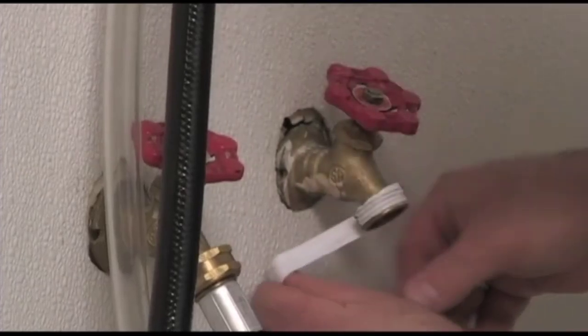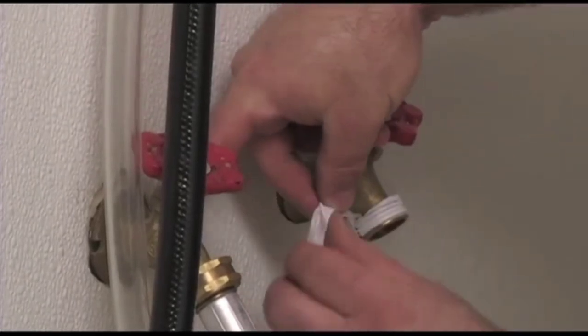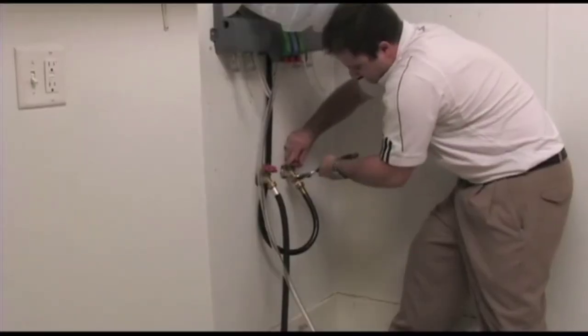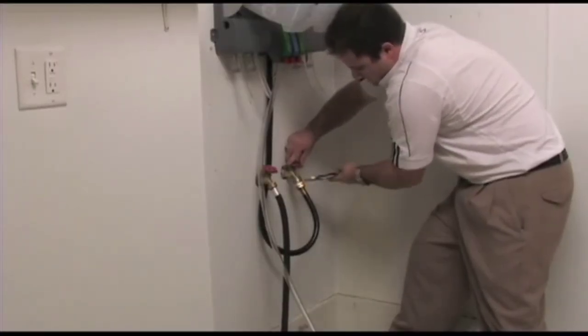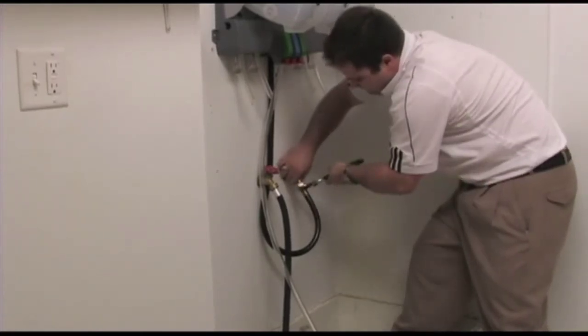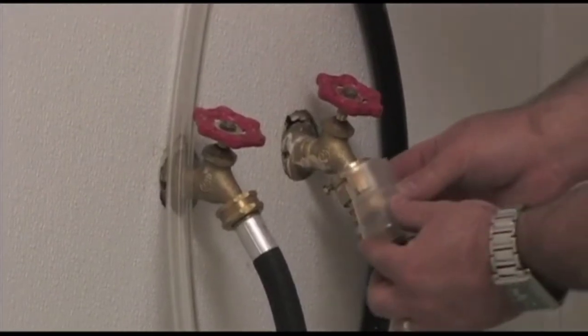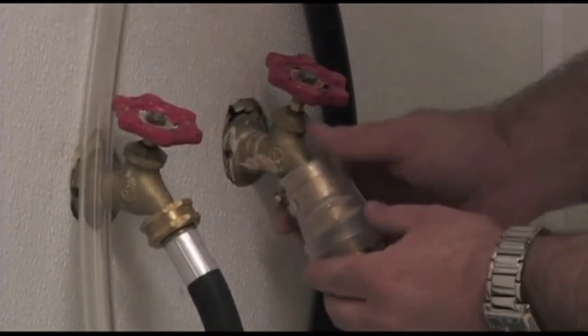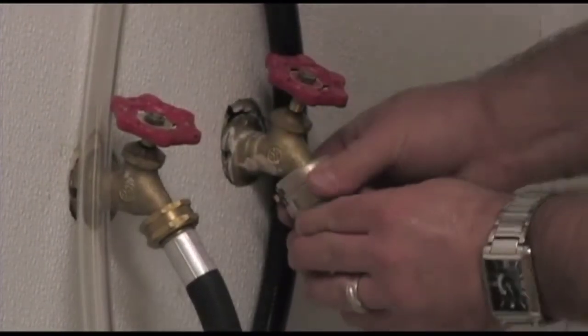Apply Teflon plumber's tape to the water source. Connect the water supply line to the water source. A vacuum breaker backflow preventer is attached to the water supply hose. Snap the plastic shroud found in the parts bag around the vacuum breaker backflow preventer.